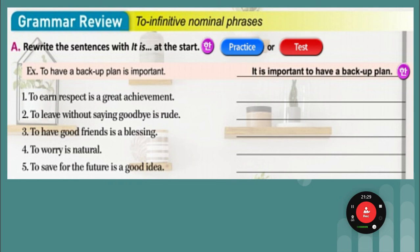I know you're all worried, but don't worry — if we stay home, wash our hands, keep our social distance, and wear masks, we're going to be okay. 'To save for the future is a good idea' — 'It is a good idea to save for the future.' Let's do it one more time: 'To have a backup plan is important' — 'It is important to have a backup plan.' 'To earn respect is a great achievement' — 'It is a great achievement to earn respect.' 'To leave without saying goodbye is rude' — 'It is rude to leave without saying goodbye.' 'To have good friends is a blessing' — 'It is a blessing to have good friends.' 'To worry is natural' — 'It is natural to worry.' 'To save for the future is a good idea' — 'It is a good idea to save for the future.'